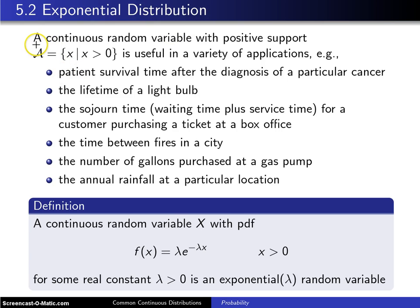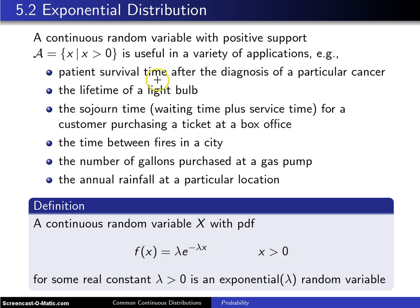Here is the motivation for the exponential distribution. A continuous random variable x with positive support, script A, which is the set of all x such that x is greater than zero, is useful in a variety of applications. For example, patient survival time after the diagnosis of a particular type of cancer — you can't have a negative survival time, so that would have positive support.